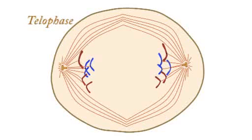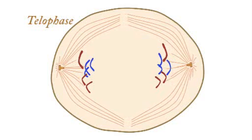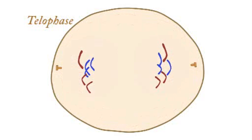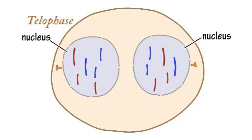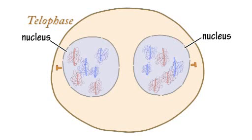In telophase, the separated chromosomes reach opposite sides of the cell. The mitotic spindle disintegrates, and new nuclear envelopes form, creating two distinct nuclei, each of which contains an identical set of chromosomes, which uncoil and disperse into chromatin again.